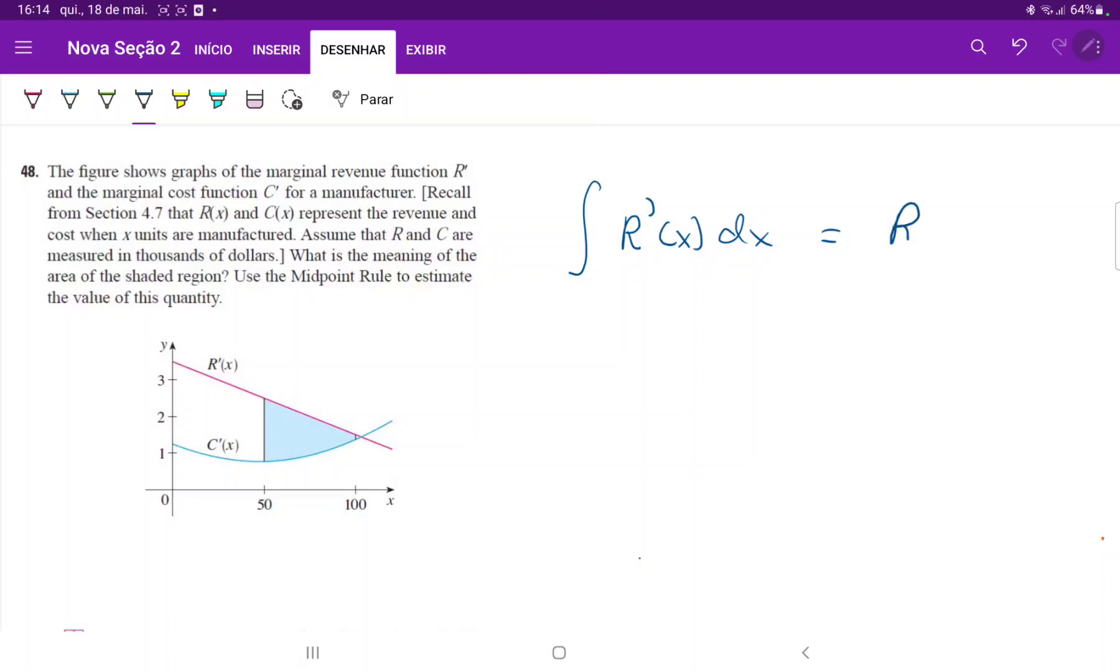I'm just going to get r of x. And the same thing goes for c prime of x dx - I would just get c of x. And remember that r of x is the revenue and c of x is the cost. So because we're given the graphs of the derivative, when we integrate it,